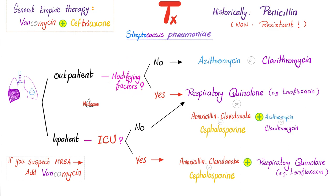Modifying factors include: old age (over 65), patients who received beta-lactams in the recent three months (more likely to have beta-lactam resistance), alcoholics, immunosuppressed people, and being exposed to sick children.